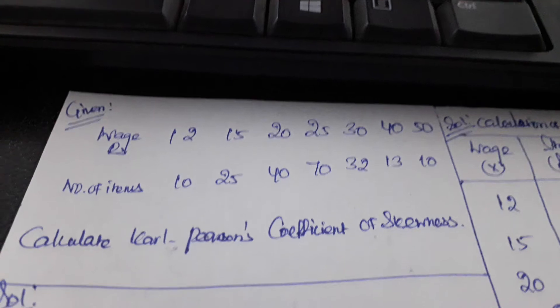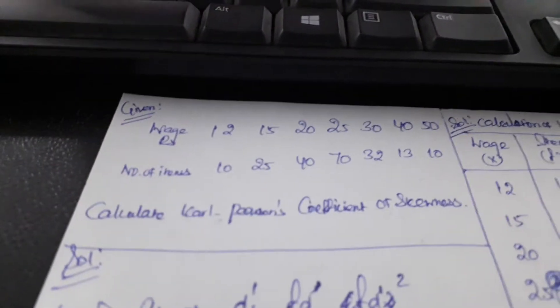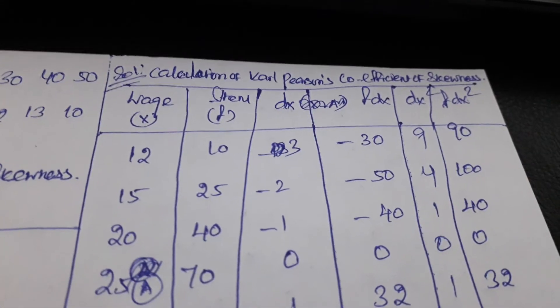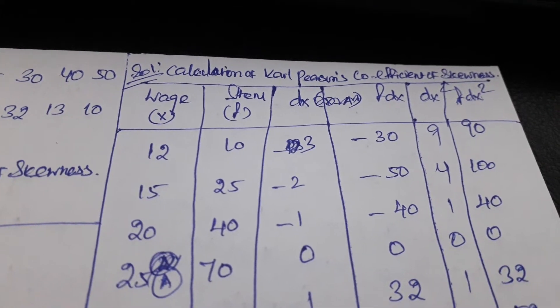First we need to prepare the table for this. Through tabular presentation we need to apply the formula, then we need to find out the coefficient. The title would be calculation of Karl Pearson's coefficient of skewness.